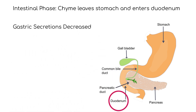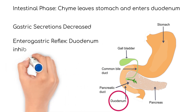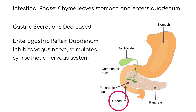During this phase, gastric secretions are decreased. Food enters the stomach, and after mixing with stomach secretions, a pasty substance called chyme leaves the stomach and enters the duodenum. Here, the enterogastric reflex is initiated, in which the duodenum works to inhibit digestion by way of inhibiting the vagus nerve and stimulating the sympathetic nervous system.